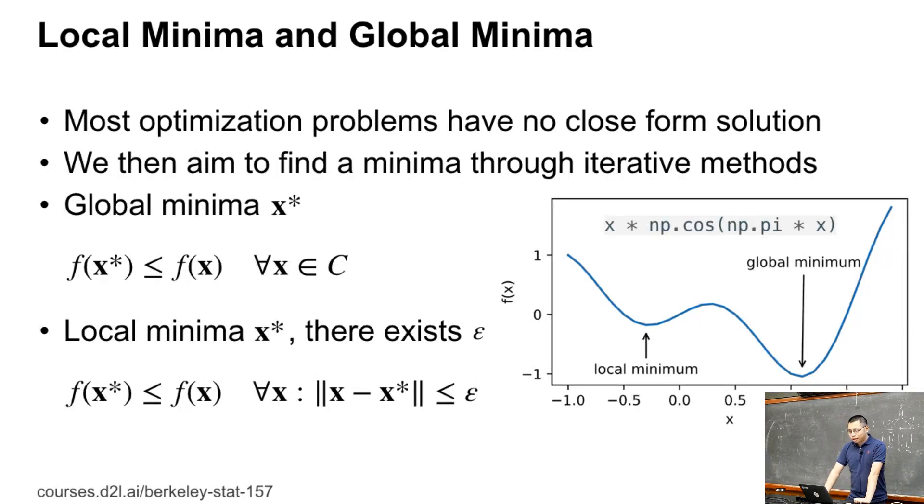The optimization problems we're interested in don't have any closed-form solution. If you have one, it's a simple problem; you don't need machine learning. Most problems are NP-complete. If it's easy to solve, it's an algorithm problem. If it's NP-complete, we're trying to learn approximate solutions, which makes most optimization methods use iterative methods, trying to find a local minima, a local solution.